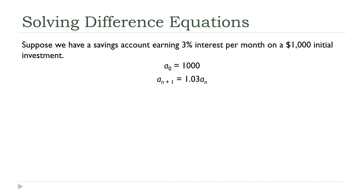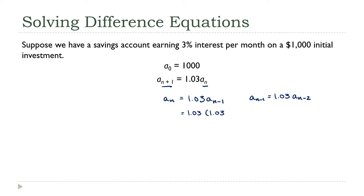Here's where I'm going to start. aₙ = 1.03·aₙ₋₁ — it's always the previous term in the sequence. Now, what is aₙ₋₁? Well, aₙ₋₁ = 1.03·aₙ₋₂. Let's substitute that in: this becomes 1.03 times 1.03·aₙ₋₂, which simplifies to 1.03²·aₙ₋₂.